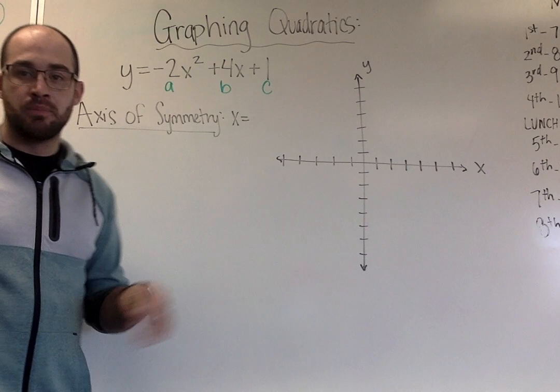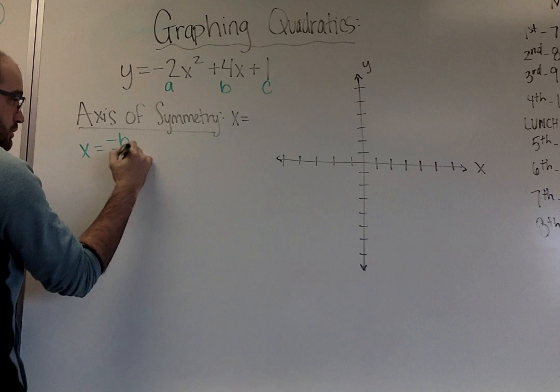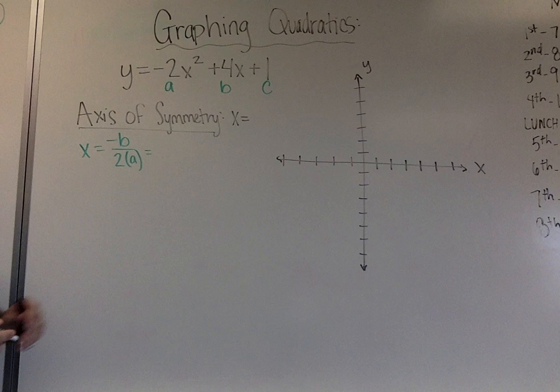Our axis of symmetry is x equals opposite b over 2 times a. So all we're going to do then is fill in our pieces from up above.